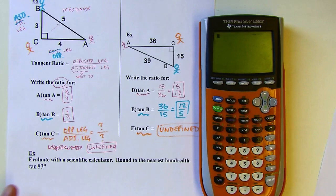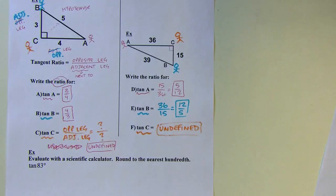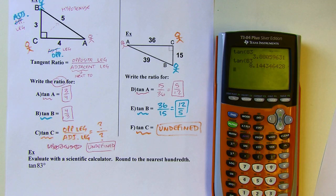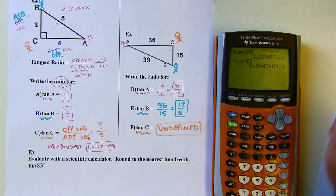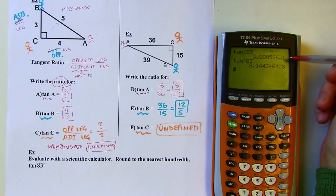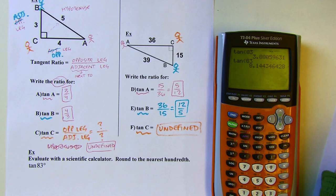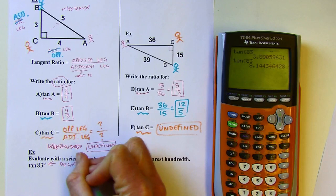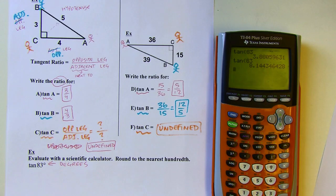I typed tangent of 83 in my calculator twice and got different answers — my calculator isn't broken. It's because I had the calculator in different modes. It's super important that you know how to change the mode of your calculator. If your calculator is already in the right mode, you can just leave it. This is in degrees — there are different ways to measure angles. There's radian measure, which we'll get into later, but for now we're just going to use degrees.